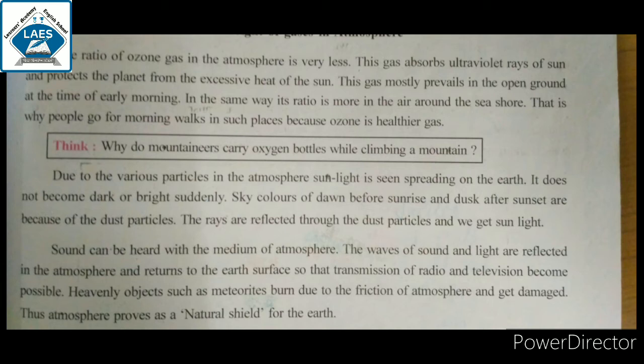Due to the various particles in the atmosphere, sunlight is seen spreading on the Earth. It does not become dark or bright suddenly. The atmosphere has various particles, and the reason is that sunlight is spread on the Earth.